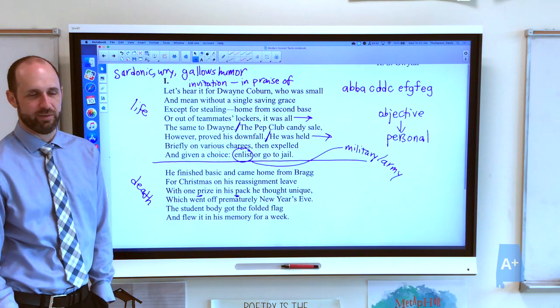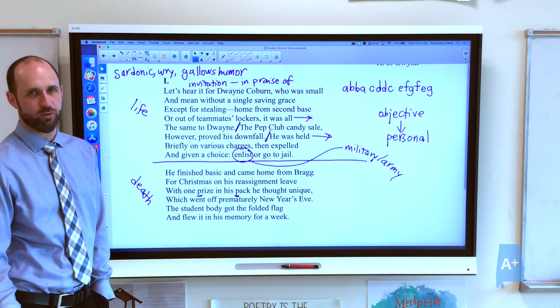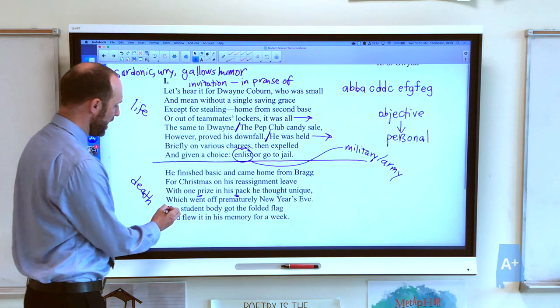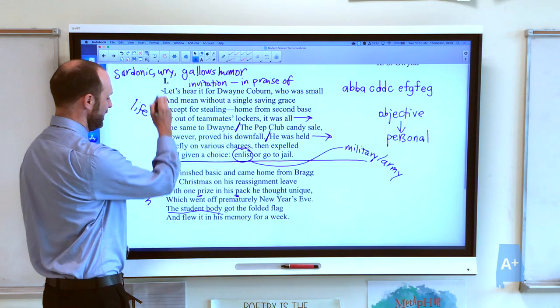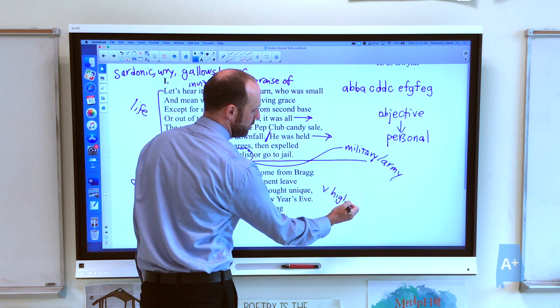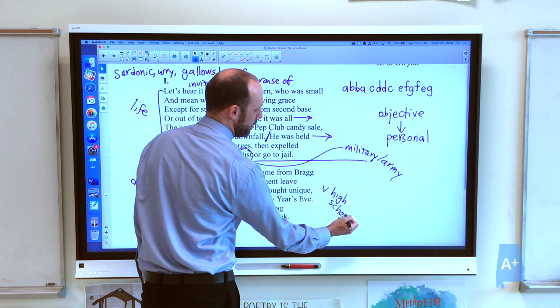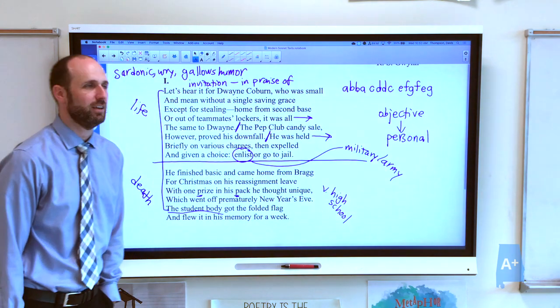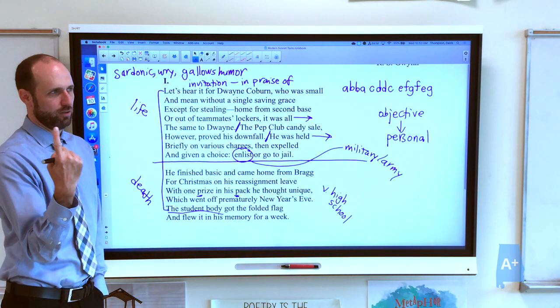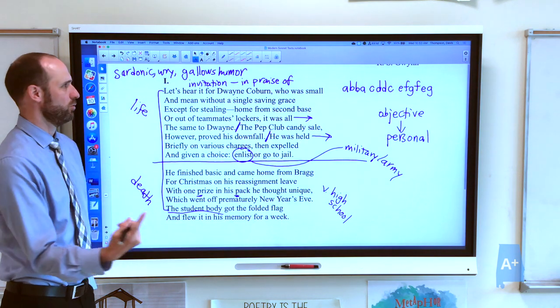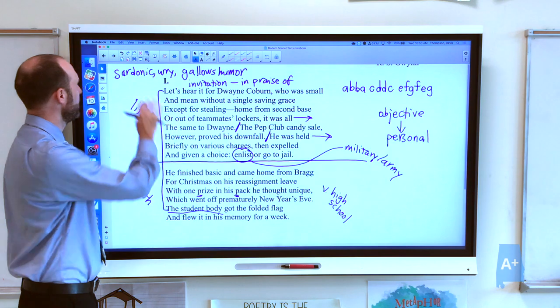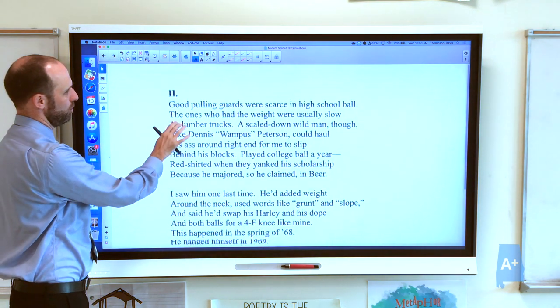The student body got his folded flag and flew it in his memory for a week. So it's not a wartime death. It's sort of the dismal death of a thief who kind of blew himself up. The student body and the let's hear it indicates there's something about this poem that is very high school. The high school got his flag. And even though he was expelled from school and was a thief, they fly it in his memory for a week. So that's one death down, the baseball player and thief, Dwayne Coburn. But our speaker has not shown up in the poem yet.